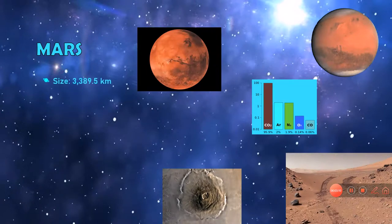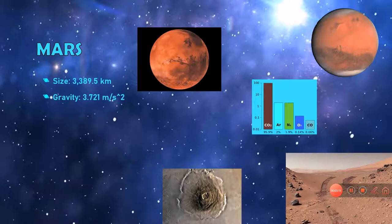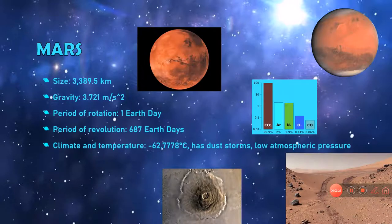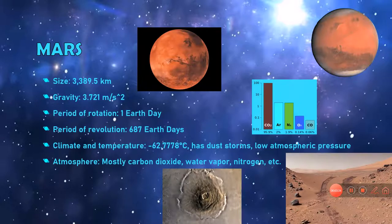Mars. The size of Mars is 3,389.5 kilometers. The gravity is 3.721 meters per second squared. The period of rotation is 1 Earth day. The period of revolution is 687 Earth days. The climate and temperature: minus 62.7778 degrees Celsius, has dust storms and low atmospheric pressure. Atmosphere: mostly carbon dioxide, water vapor, nitrogen, etc. Soil contains iron oxide.